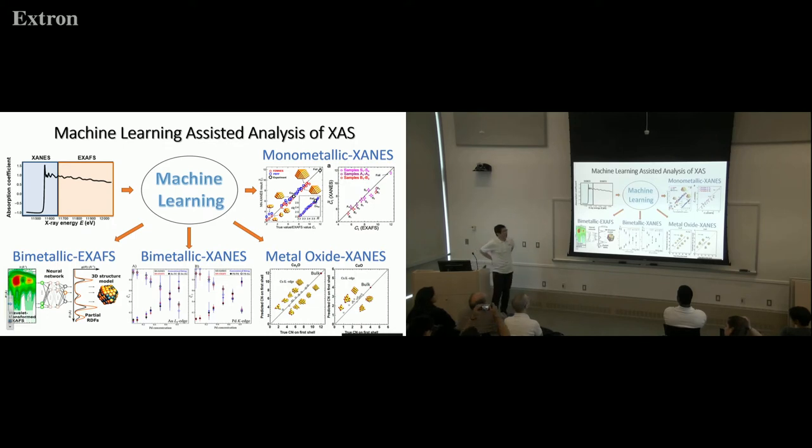X-ray absorption spectroscopy is a technique used to obtain structure information from materials. The left part is the X-ray near edge structure, XANES, and the right part is the extended X-ray absorption fine structure, EXAFS.